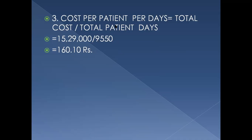Third Working Note — Cost Per Patient Per Day is equal to Total Cost divided by Total Patient Days. Previously we found income per patient; now we find cost per patient. Total Cost is 15,300,000 divided by 9550, which gives 1606.10 rupees.